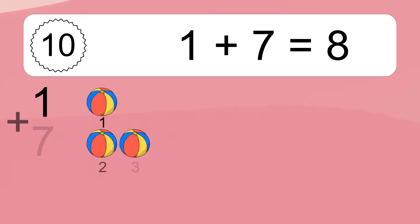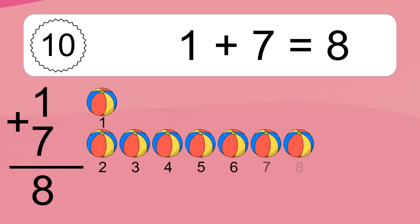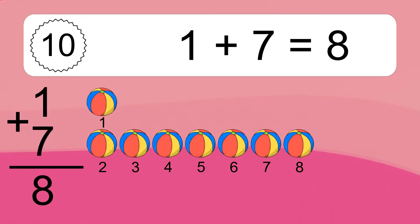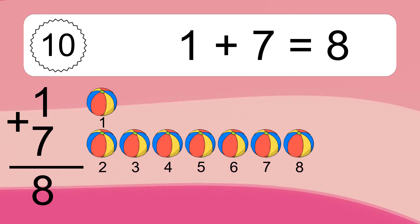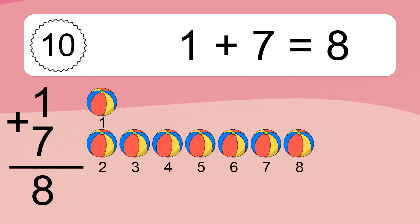1 plus 7 equals 8. Let's count it. 1, 2, 3, 4, 5, 6, 7, 8.